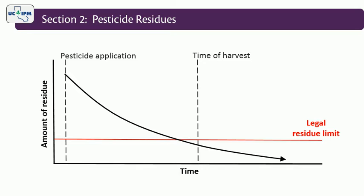Pesticide residue levels remaining on the crop at the time of harvest must be below legal limits set by regulatory agencies. By the time the food reaches the grocery store or the processing plant, pesticides are expected to be far below legal limits.